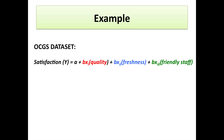The example we're going to look at today comes from the OCGS data set. What we're interested in seeing is whether satisfaction, when driven by quality, freshness and friendly staff, allows us to validate our assumptions. There might be some things that we need to change before we rerun our analysis, if that's necessary, and estimate our coefficients. So we're testing for the assumptions first.